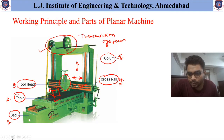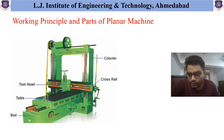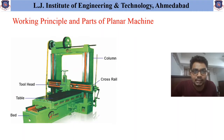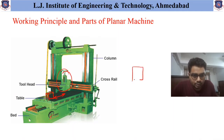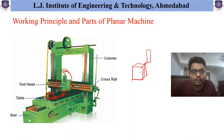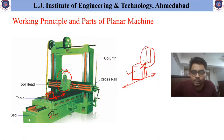To understand the working principle of the Planner Machine, first understand which is the primary motion. The primary motion in the case of the Planner Machine is the reciprocating movement of the table. The workpiece is set on the table, the tool is set in the tool head, and the entire workpiece reciprocates against the tool to remove material from the workpiece.